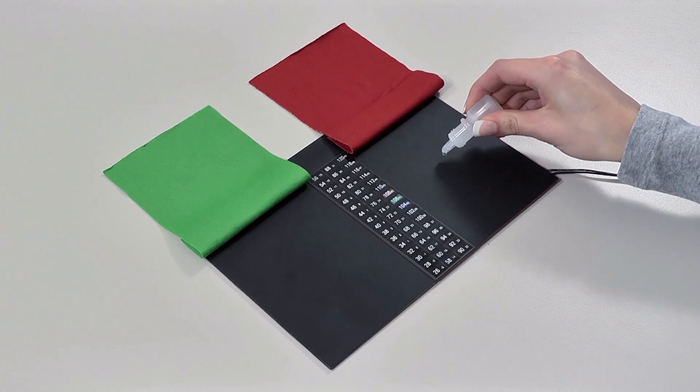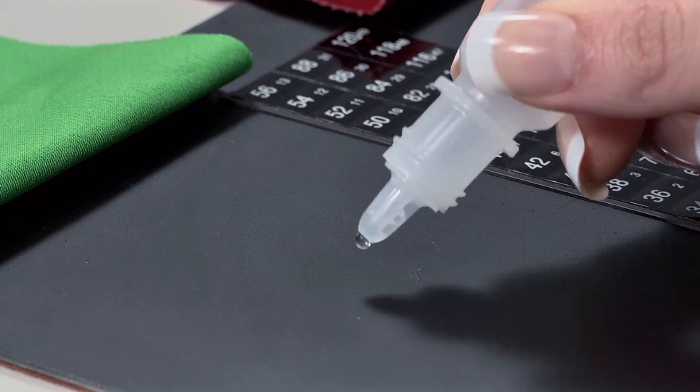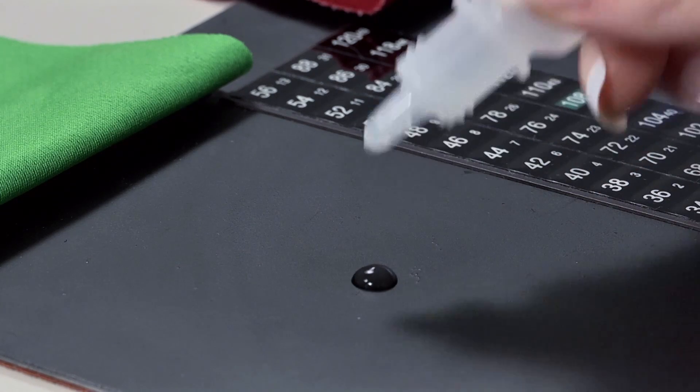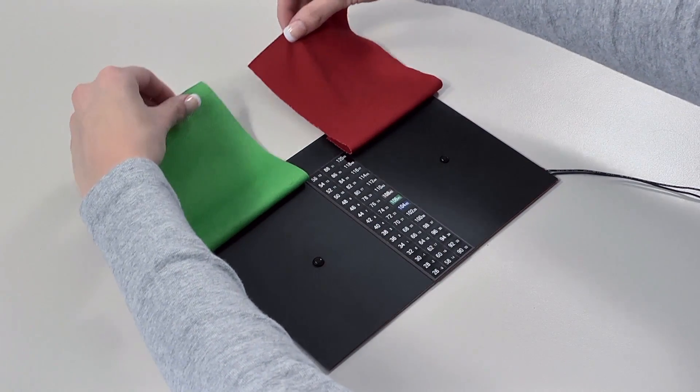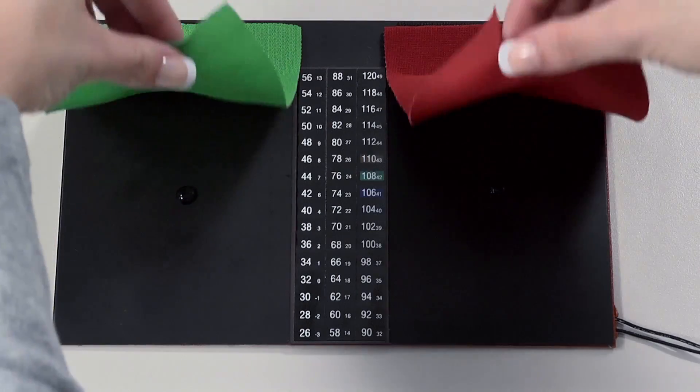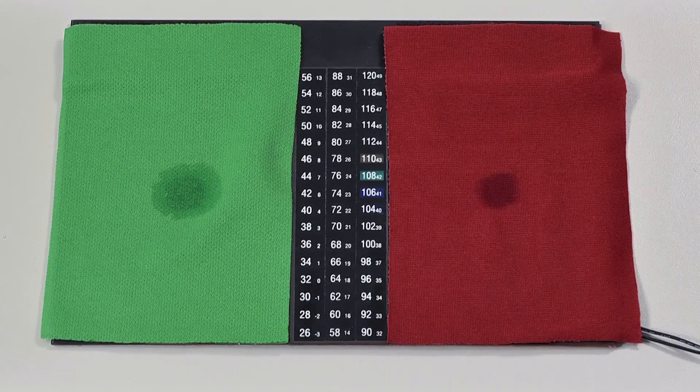This hot plate represents the skin, and these drops of water represent moisture on the skin. The red polyester fabric is one of the leading moisture management brands on the market, and the green fabric is polyester treated with Kokona. As you can see,